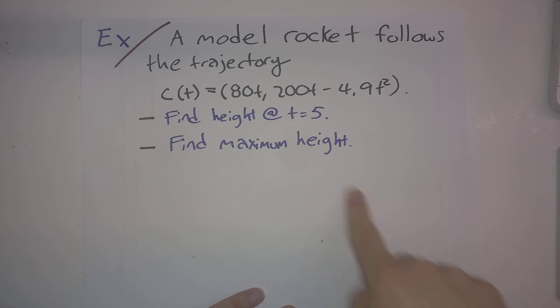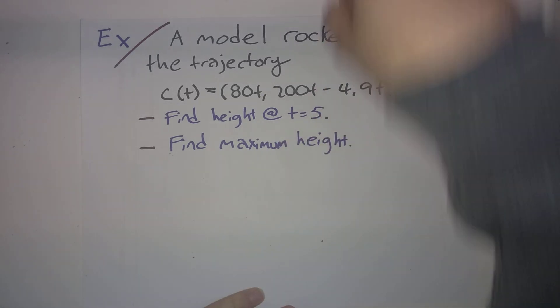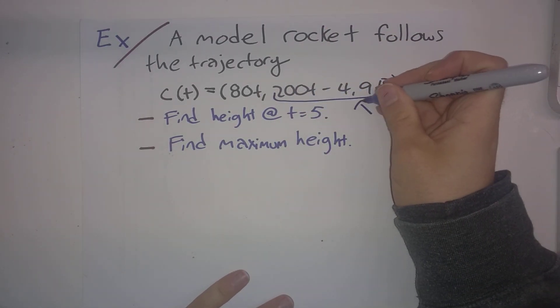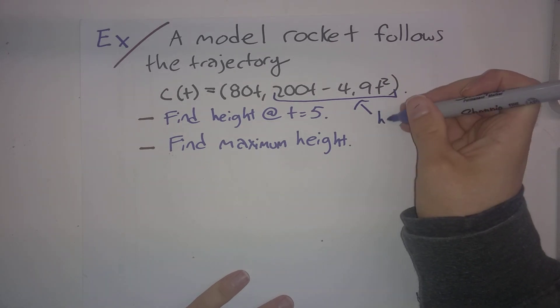And so we're going to have two things to figure out. One thing is what's the height at t = 5. And one is what's the maximum height. Okay, so which one here is giving us the height?